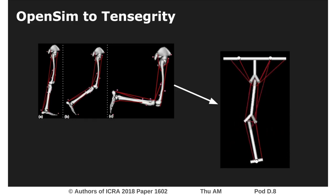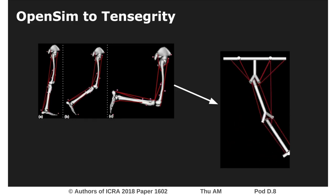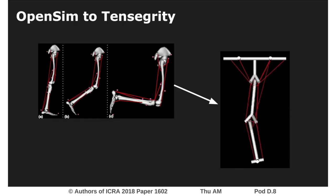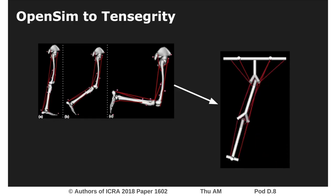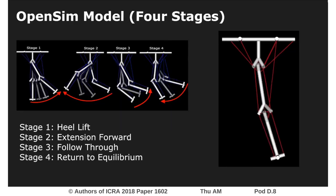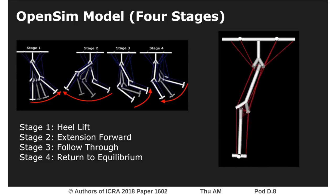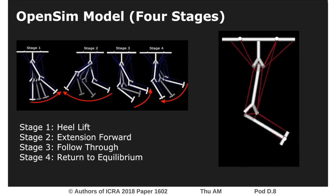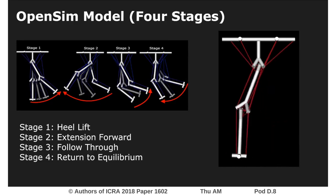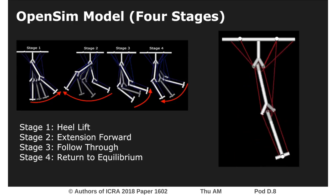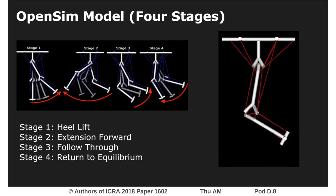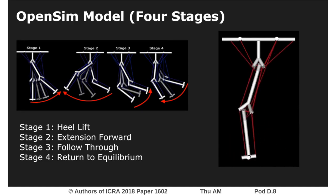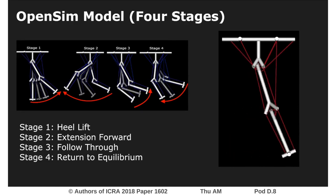By taking bits and pieces away from the human model shown in the previous slides, we eventually created our bio-inspired tensegrity flexural joints. Referring back to human gait, we simplified our understanding to four main stages. This allowed us to work towards a tensegrity flexural joint with the expected behavior of achieving those four stages of gait.